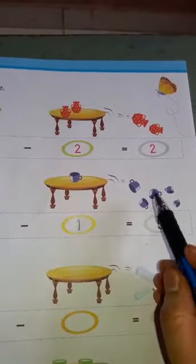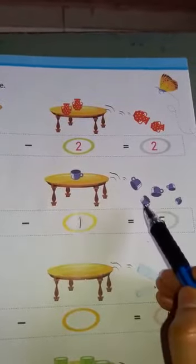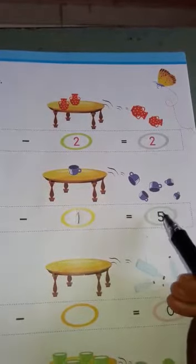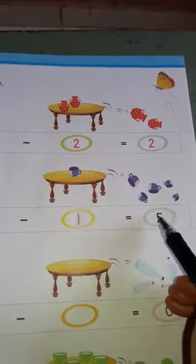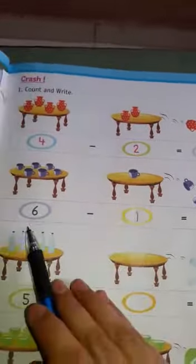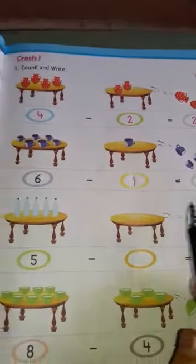Equals to how many cups are fall down? 1, 2, 3, 4, 5. 5 cups are fall down. 6 minus 1 equals to 5.